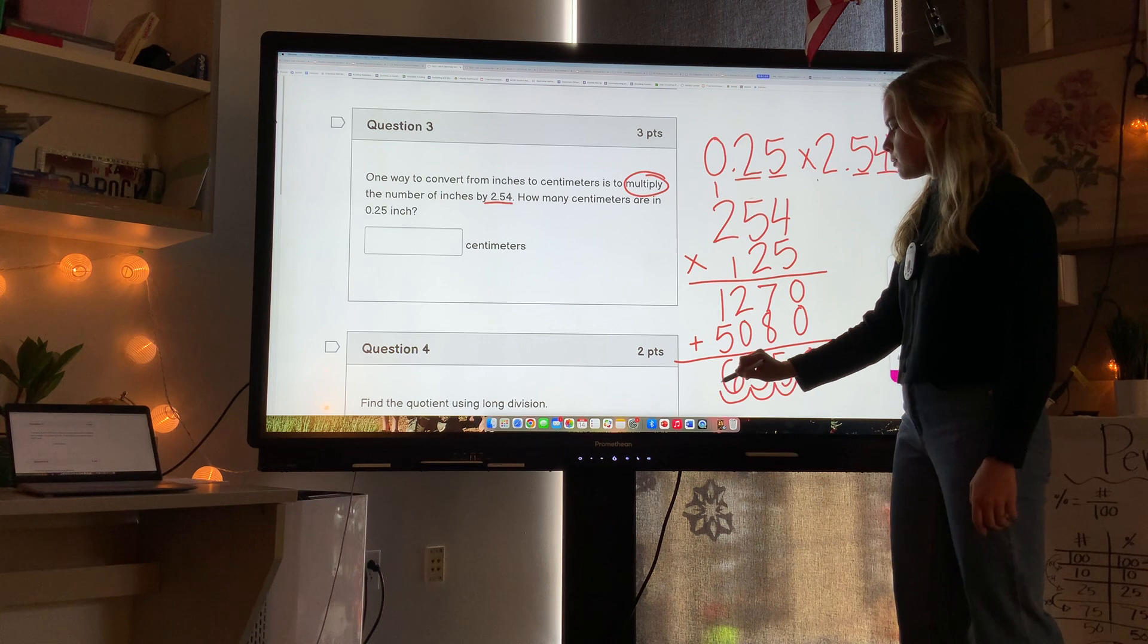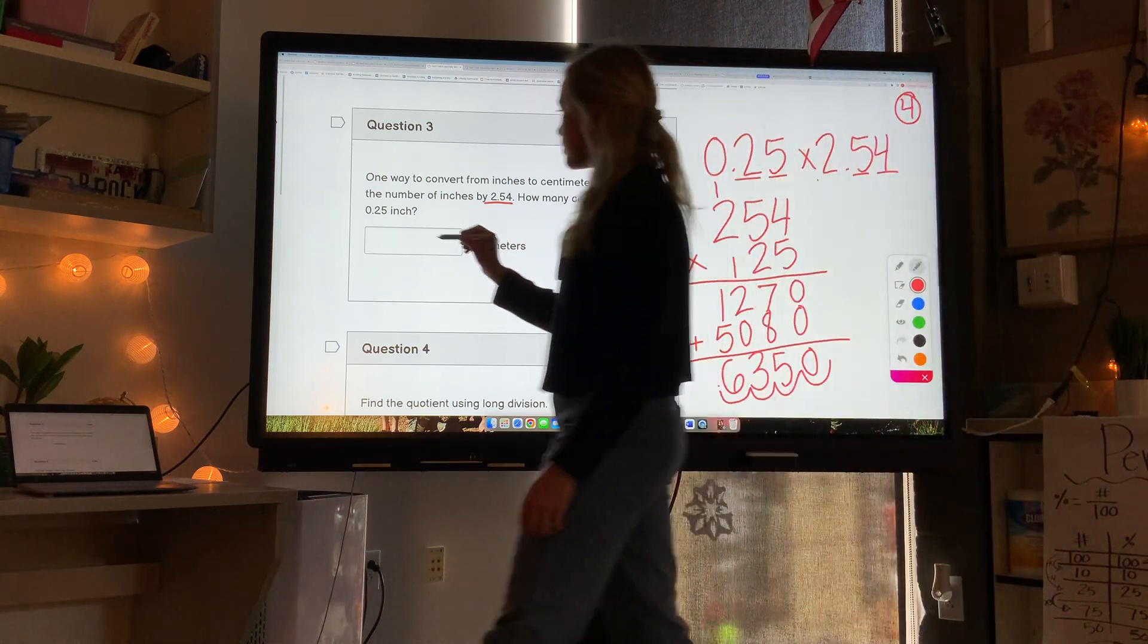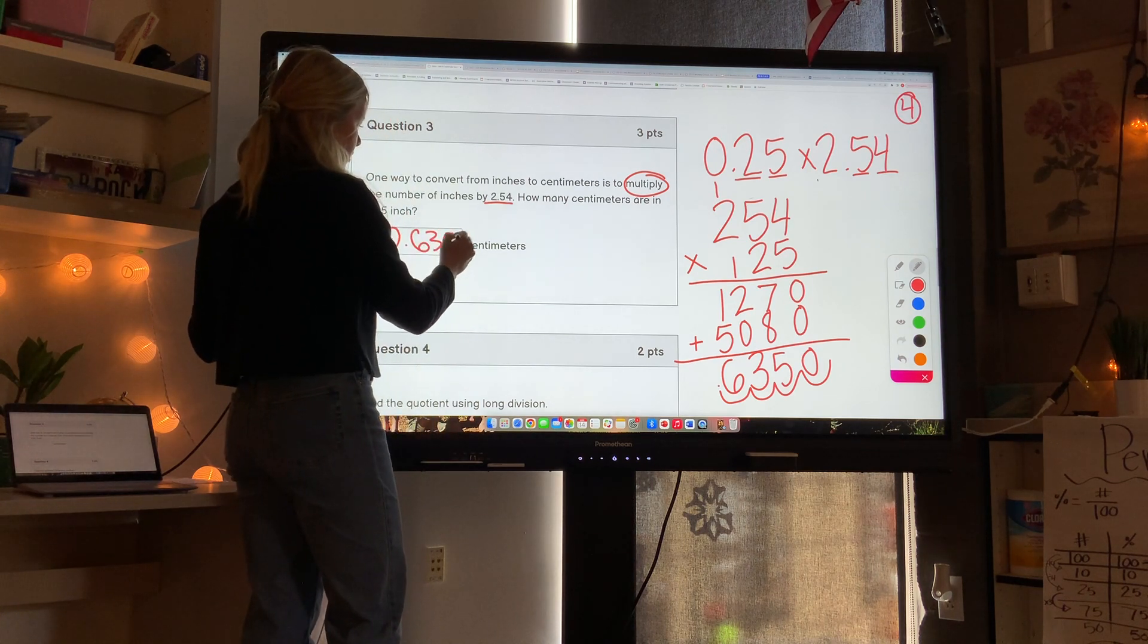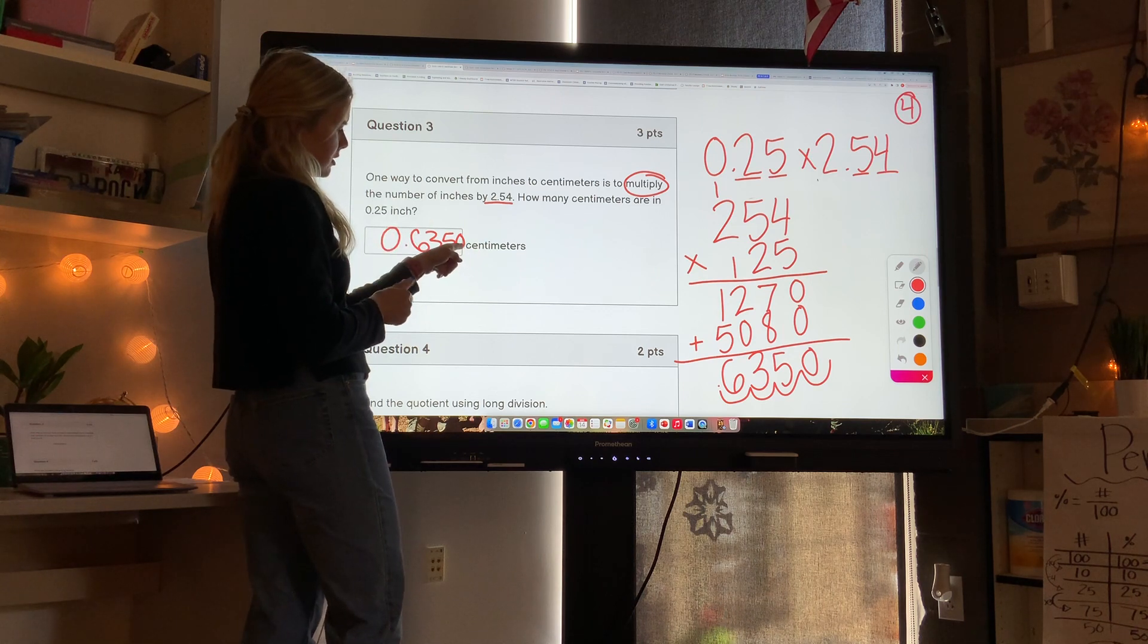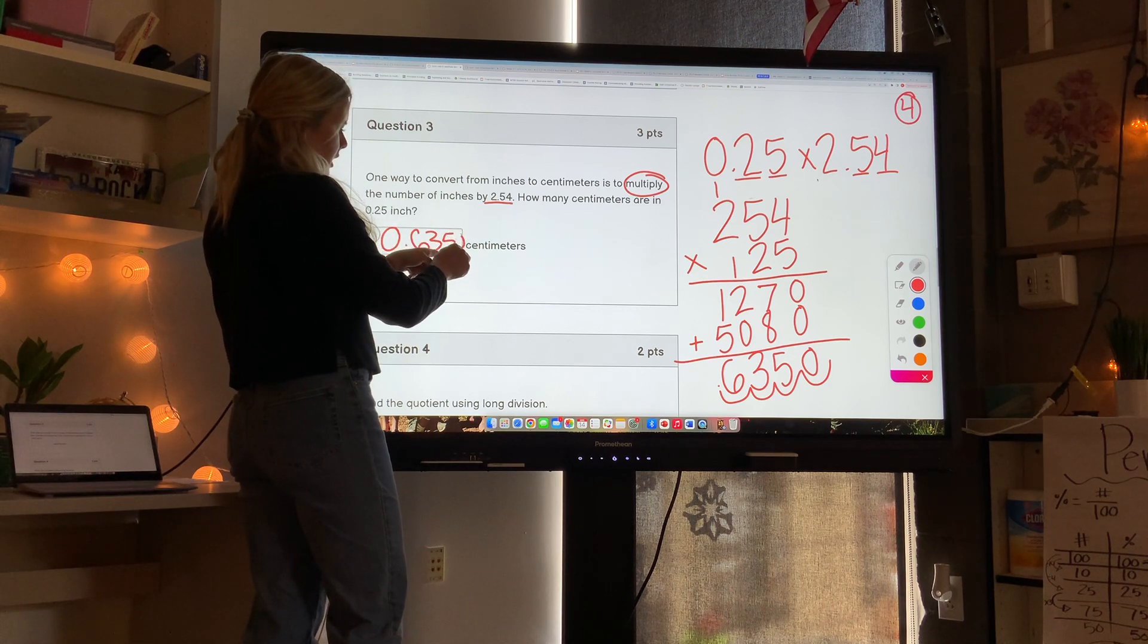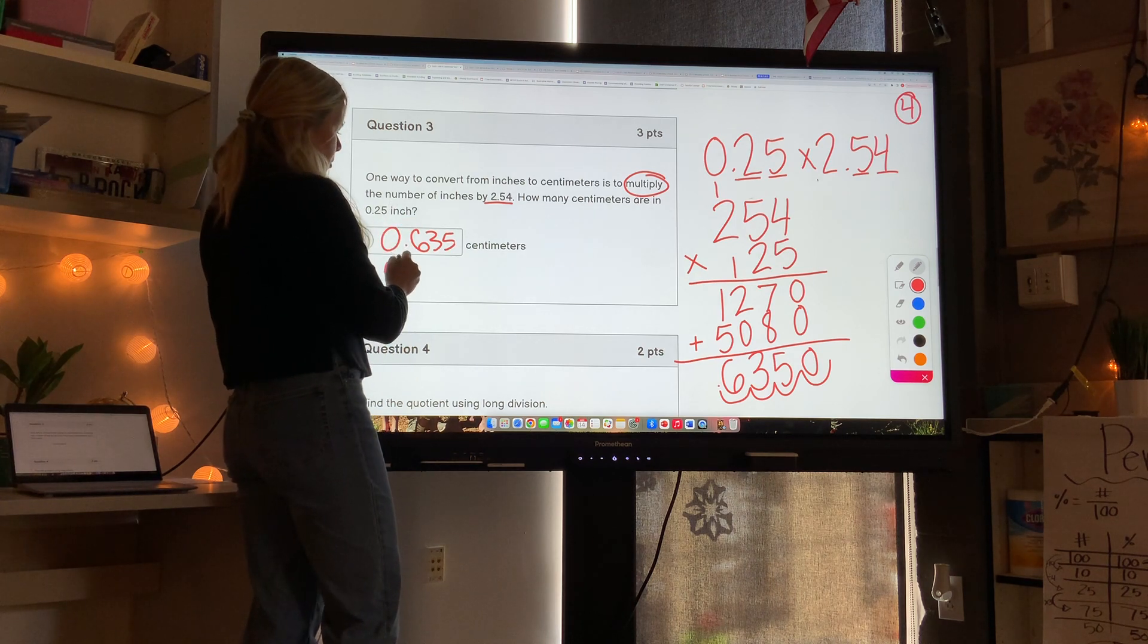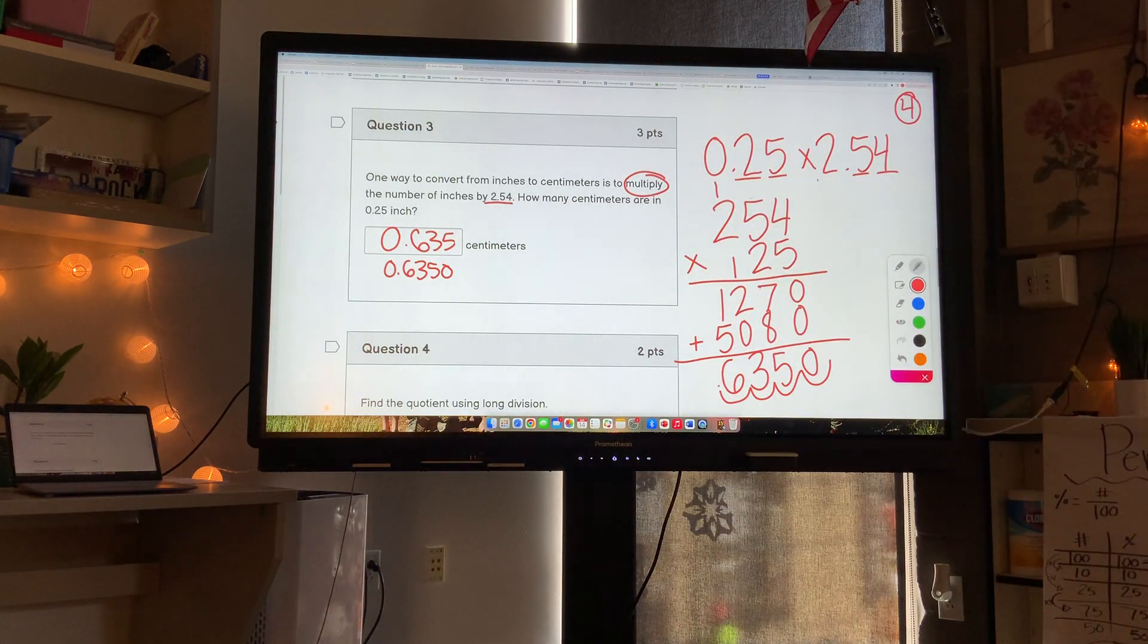I place my decimal back 1, 2, 3, 4 times. So it's 0.6350, or in other words 0.635. There's four numbers after my decimal. This last zero doesn't need to be there, so technically you could just write it as 0.635, but 0.6350 works as well.